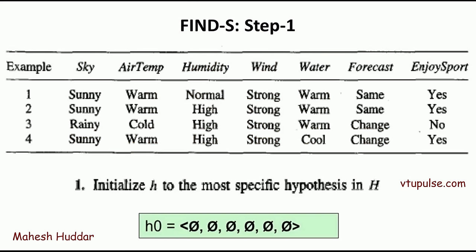This is the dataset given to us. There are 4 examples and 6 attributes: Sky, Air Temperature, Humidity, Wind, Water, and Forecast. EnjoySport is the target variable. It is a binary classification.